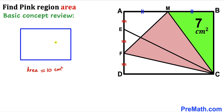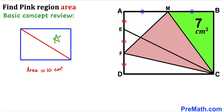Let's assume the area of a rectangle is 10 cm². If we draw a diagonal for this rectangle, it divides the rectangle into two equal parts — each triangle has area 5 cm². So both halves are congruent and equal.